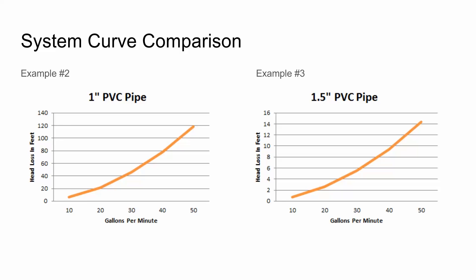Additionally, if you were designing a system targeting perhaps 30 gallons per minute and you wanted to know whether inch and a half pipe or one inch pipe would be the better choice, then it's definitely clear cut. In this example we've got roughly 40 feet or just under 20 PSI of friction loss, and then over here we have less than 3 pounds of friction loss that occurs at 30 gallons per minute.